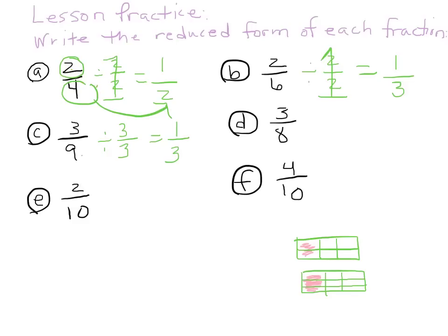For three-eighths, let's think: what number goes into both three and eight? Counting multiples of three: three, six, nine. There's no eight there. This fraction is already in its reduced form — it's just going to be three-eighths. I can't reduce it any further because three and eight have no numbers in common. There is no greatest common factor. For two-tenths, two is as high as we can go. Ten is an even number, so I can divide by two over two. Two goes into two once, two goes into ten five times. One-fifth is the equivalent fraction of two-tenths.